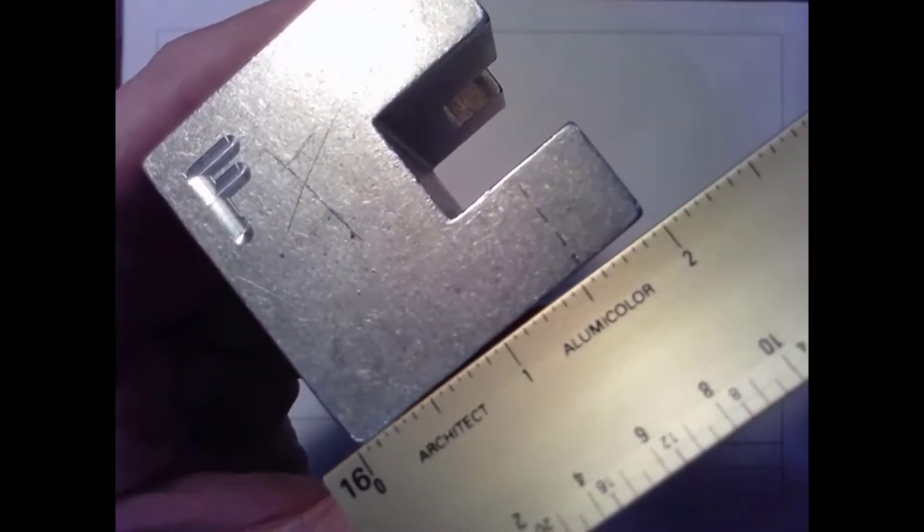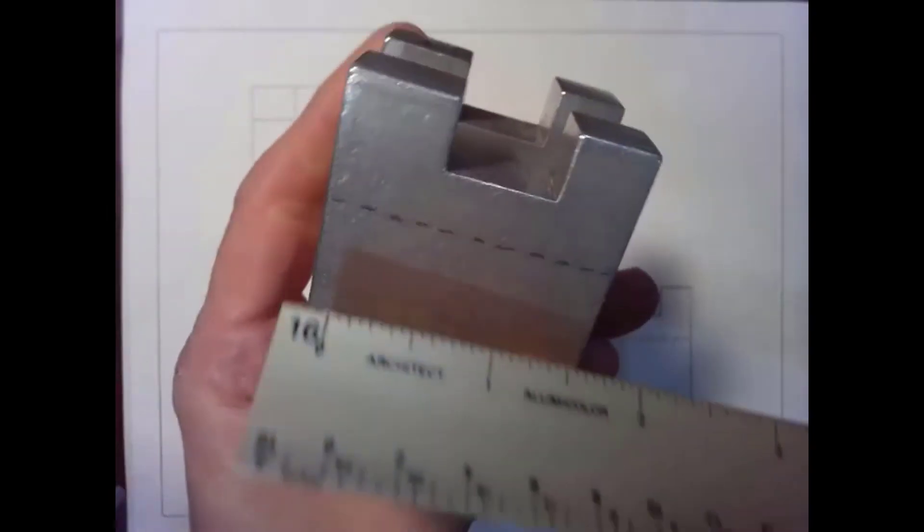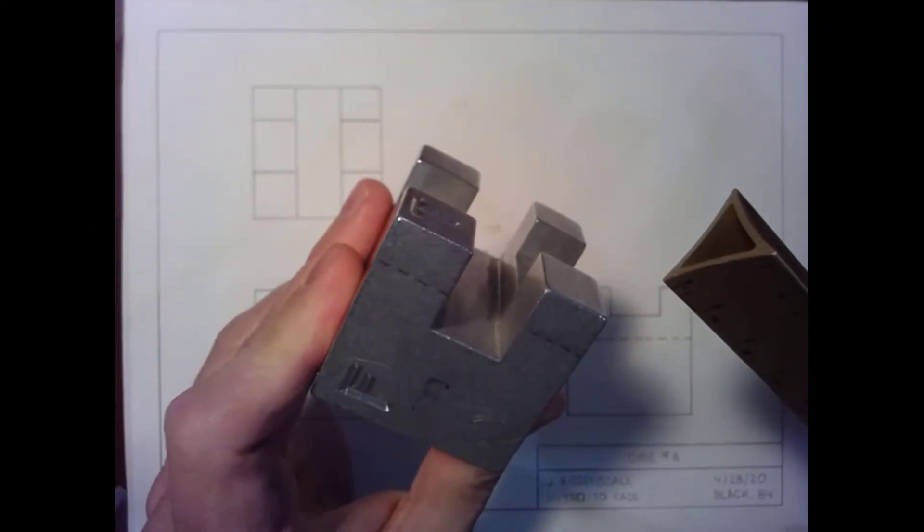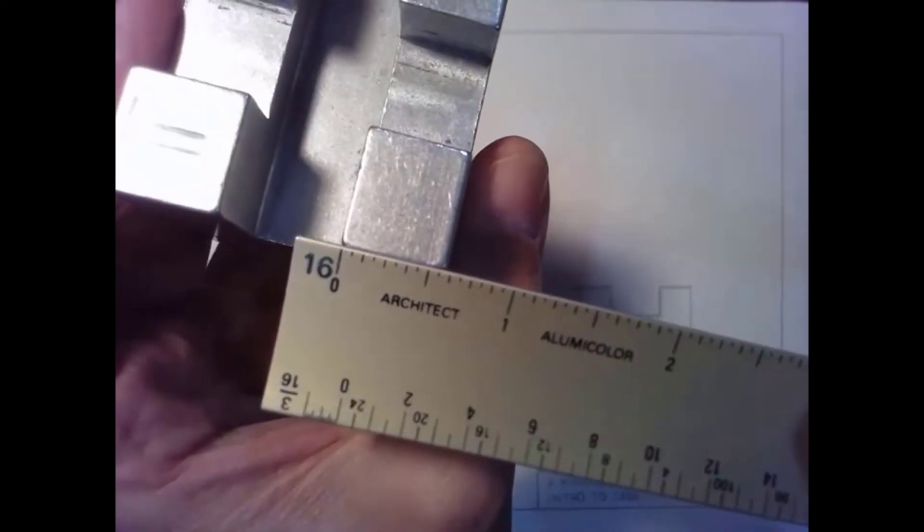We would then proceed to measure the entire part to get its overall shape and dimension. From there we can use our ruler to measure the various features.